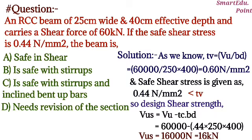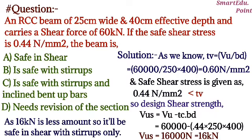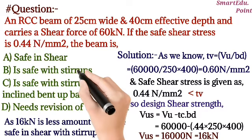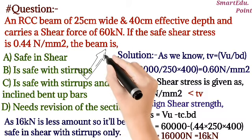Now as we see, the 16 kilonewton is very less amount, so it will be safe in shear with stirrups only. And our right option will be option B because it is safe with stirrups. Thank you.